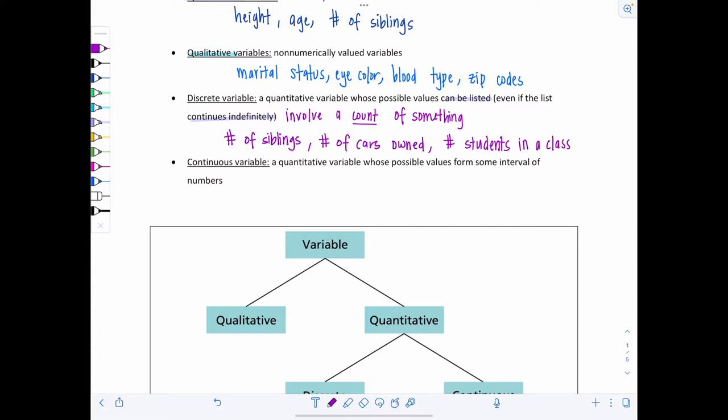Like for example, the number of siblings that you have, you would count those. The number of cars you own, or the number of students in a class. These are things that are counted, not measured. And you can't have halves of them. You can't have like two and a half siblings. You just have one, two, three, four, etc.